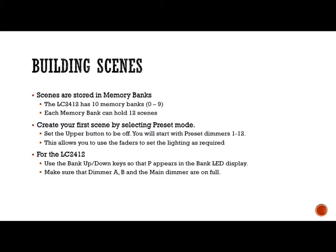On the LC2412, we set the bank up/down key so that P appears in the bank LED display, which tells us we're working with the presets. We make sure dimmer A is on full, B we'll put on full and leave it there, and the main dimmer will be on full too.